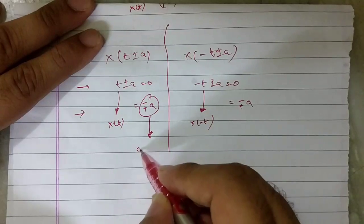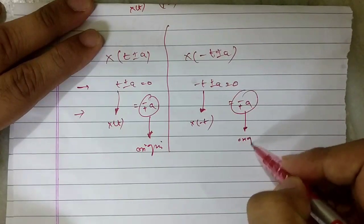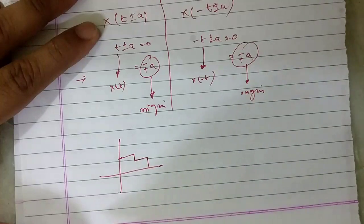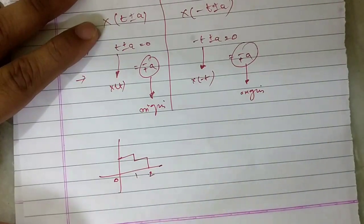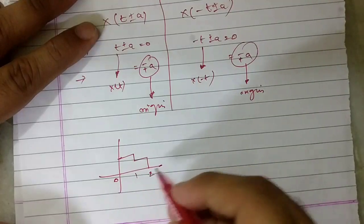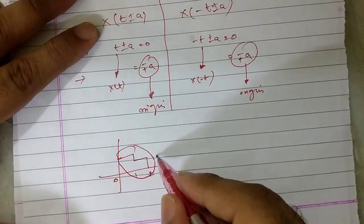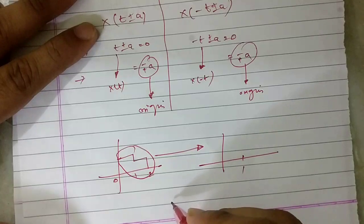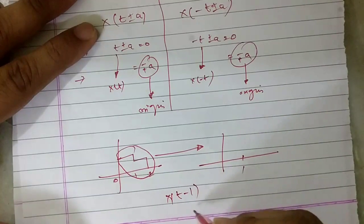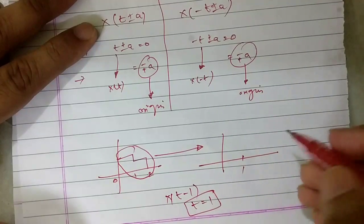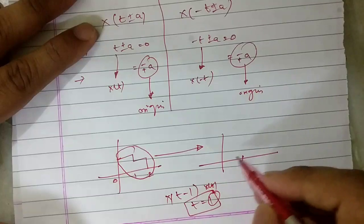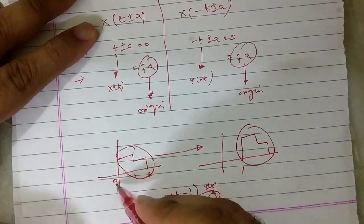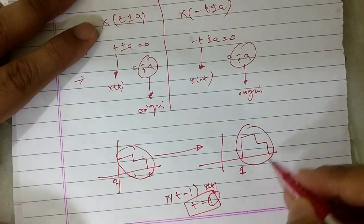After solving, you get the value of the new origin. For example, suppose the graph spans 0, 1, and 2. Origin shifting means you shift the entire graph. Take X(t-1): equating gives t = 1, so draw the X(t) graph with origin at 1. The same graph shape is drawn, but the origin moves from 0 to 1, and it would further shift to 2 or 3 as needed.